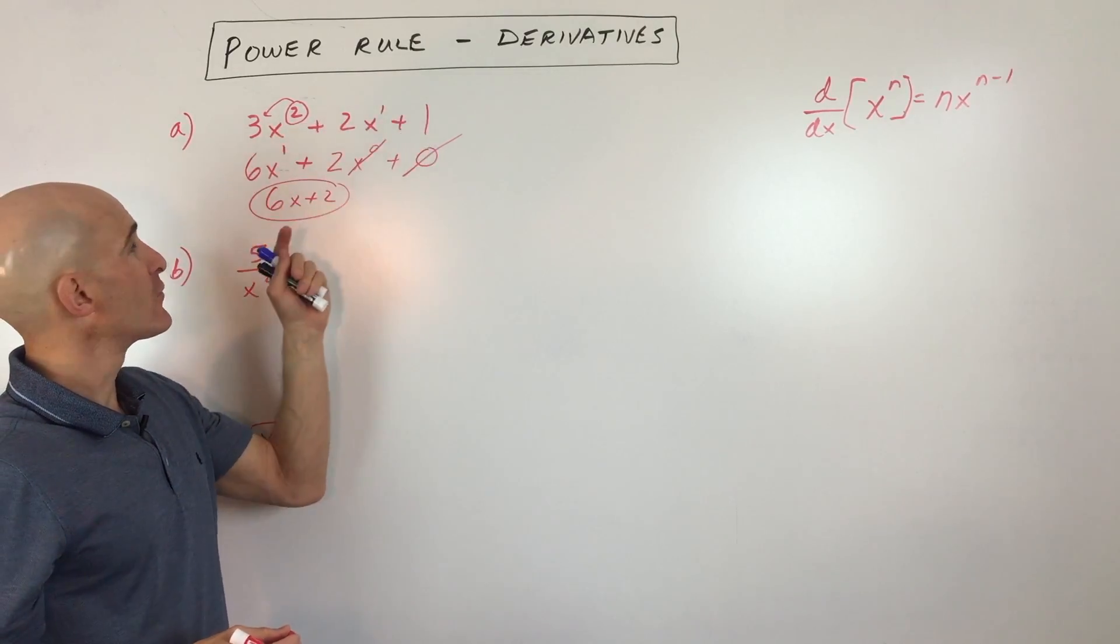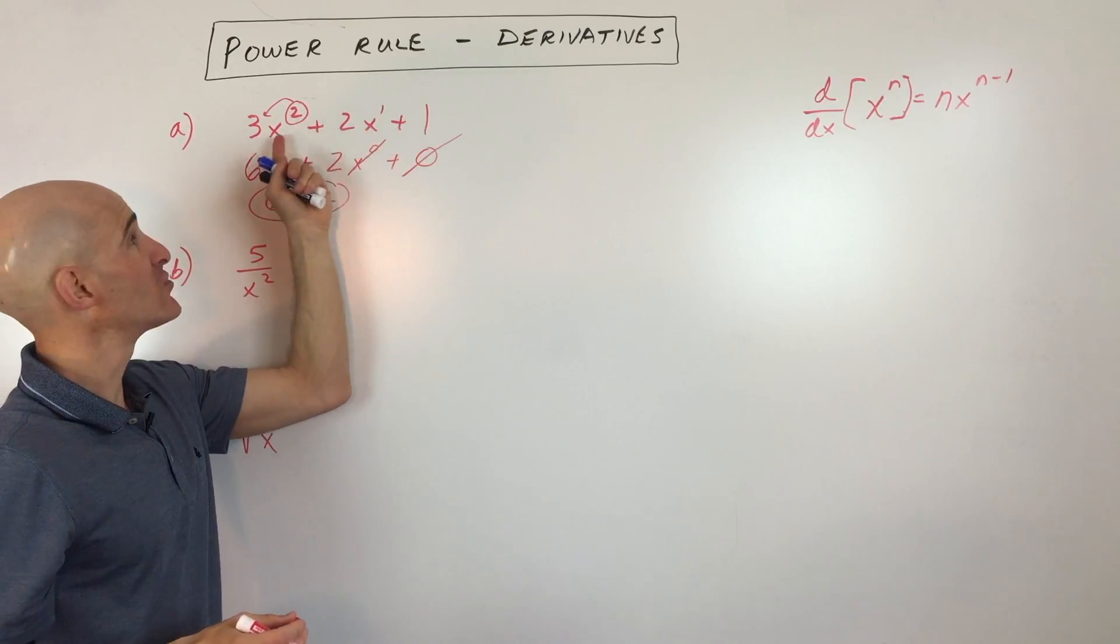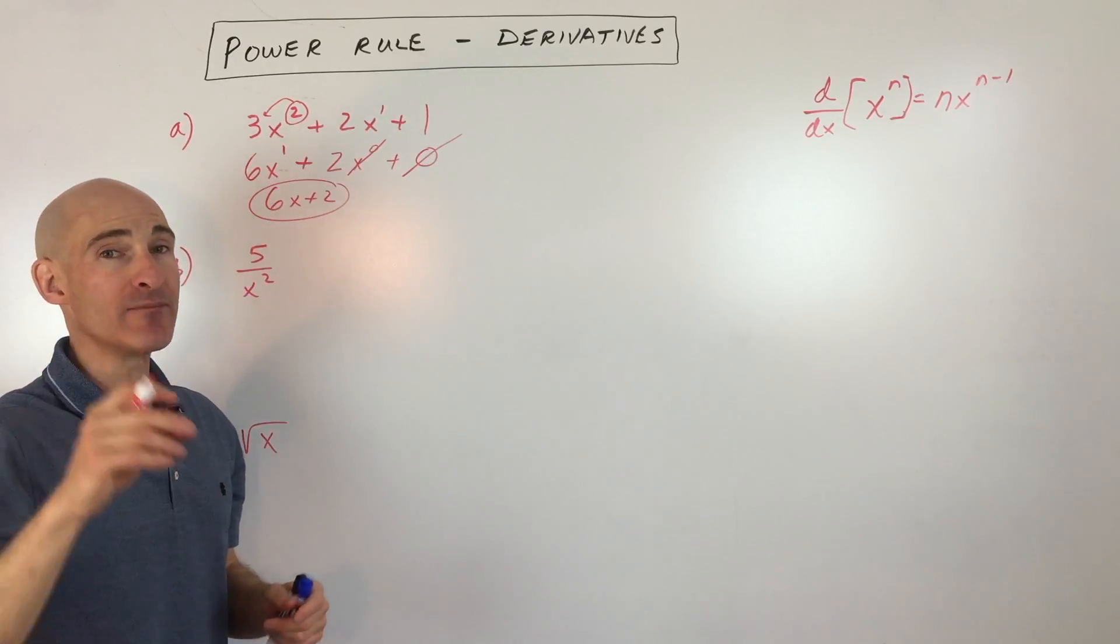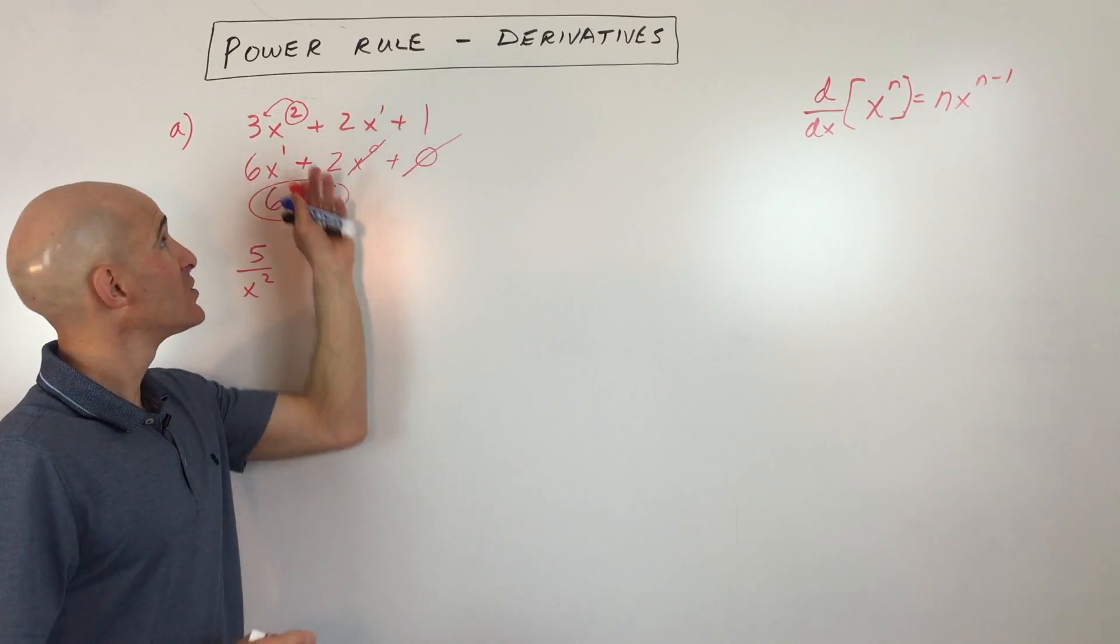Now, remember what a derivative is. It's really a formula for the slope of the tangent line to this graph or to this curve along any point. So here we have a formula for finding that slope of the tangent line to this graph.